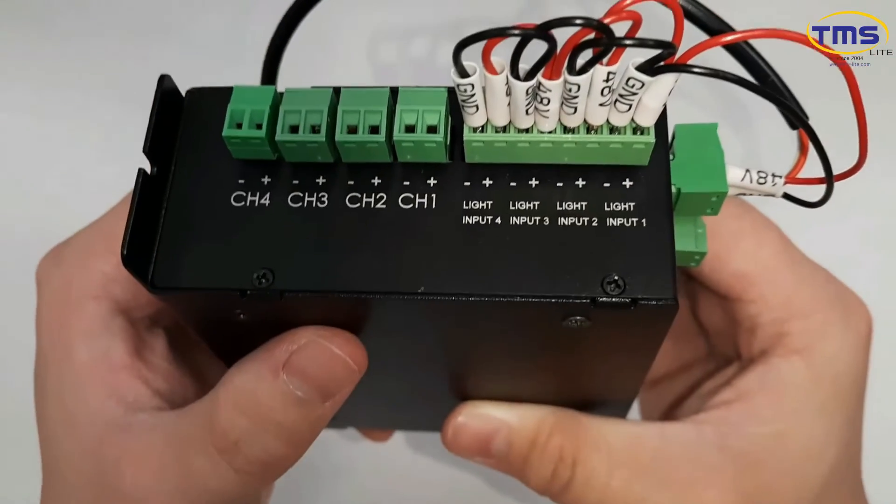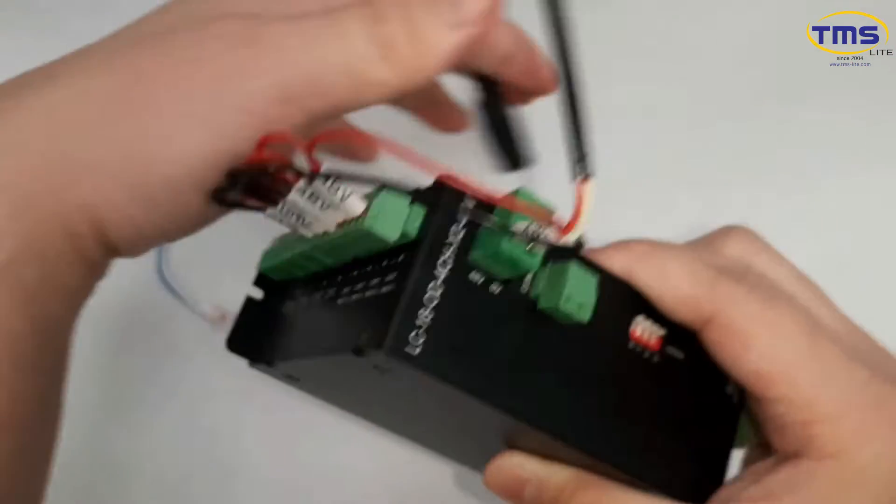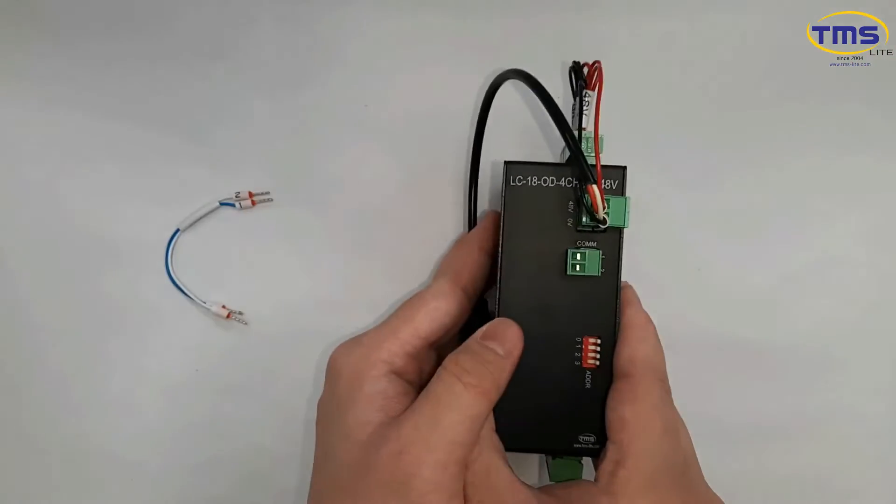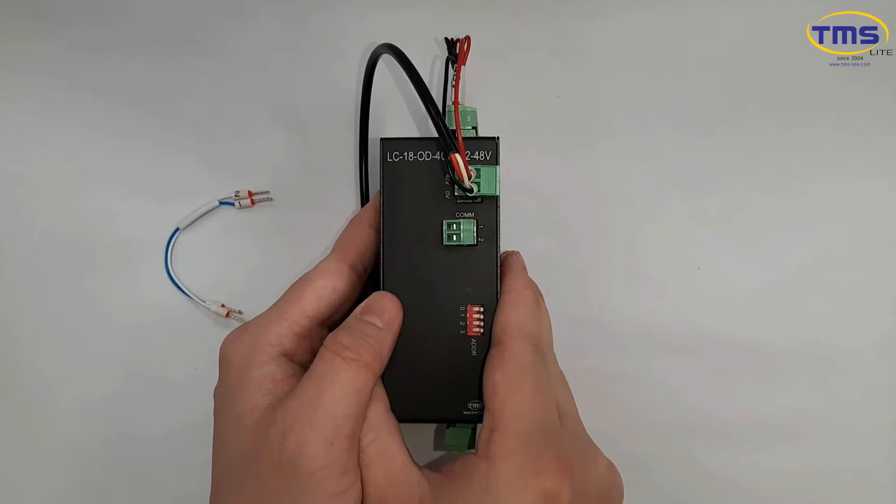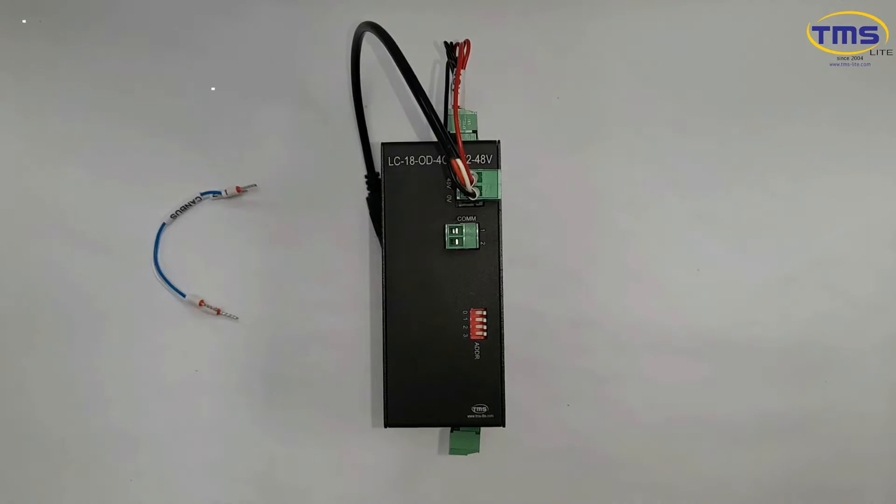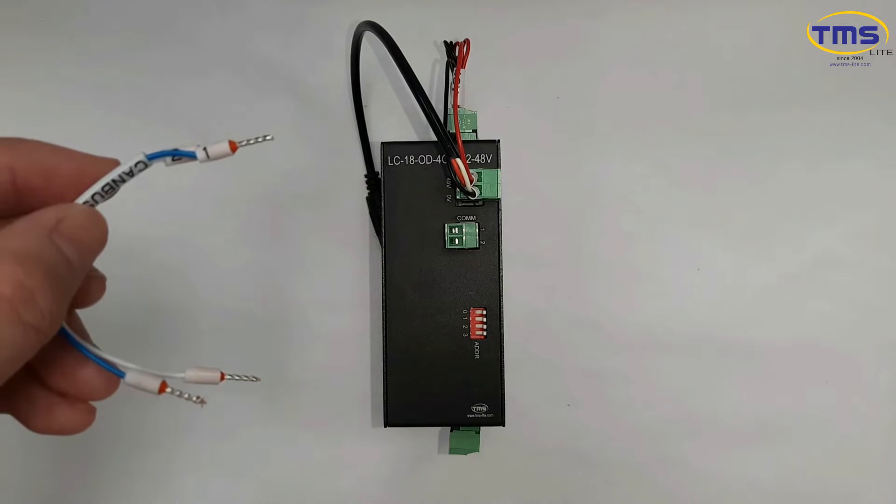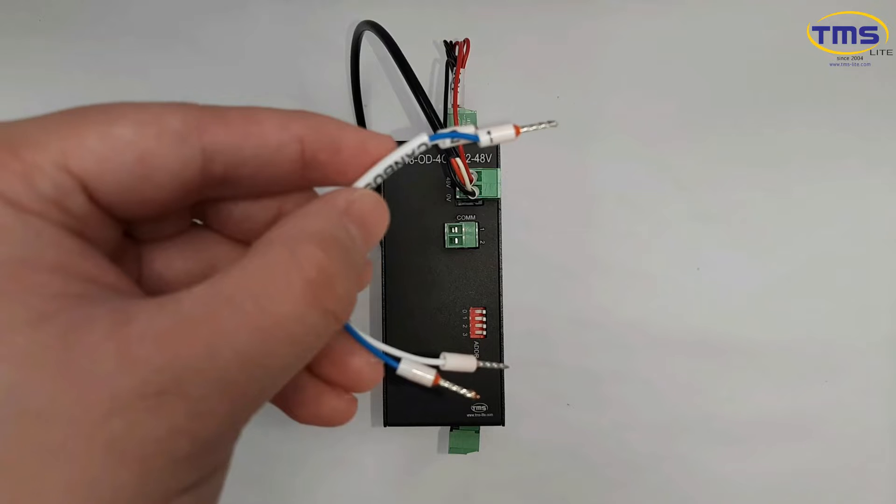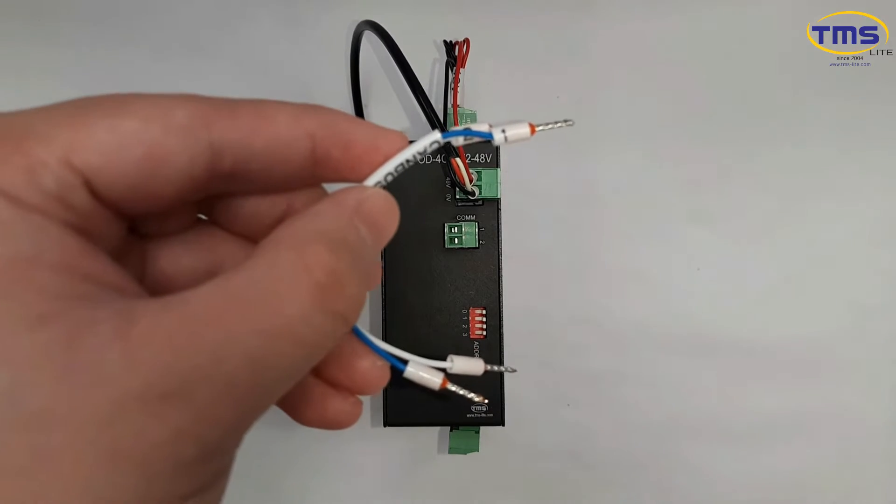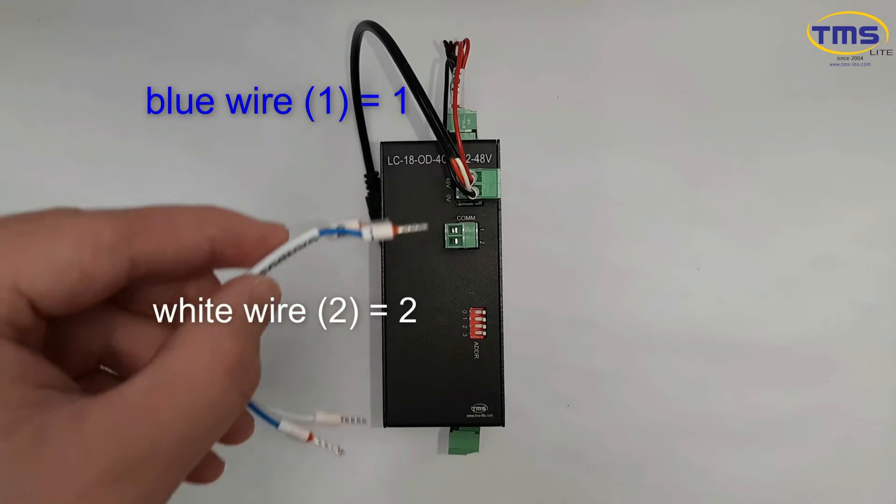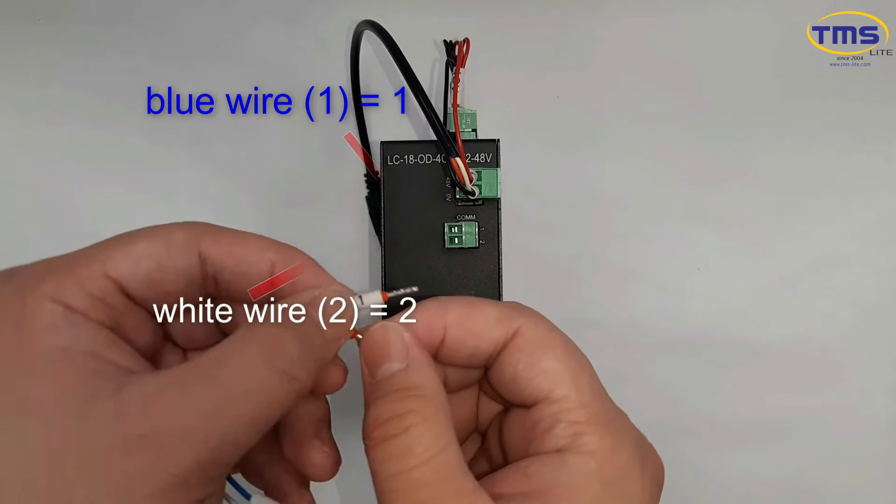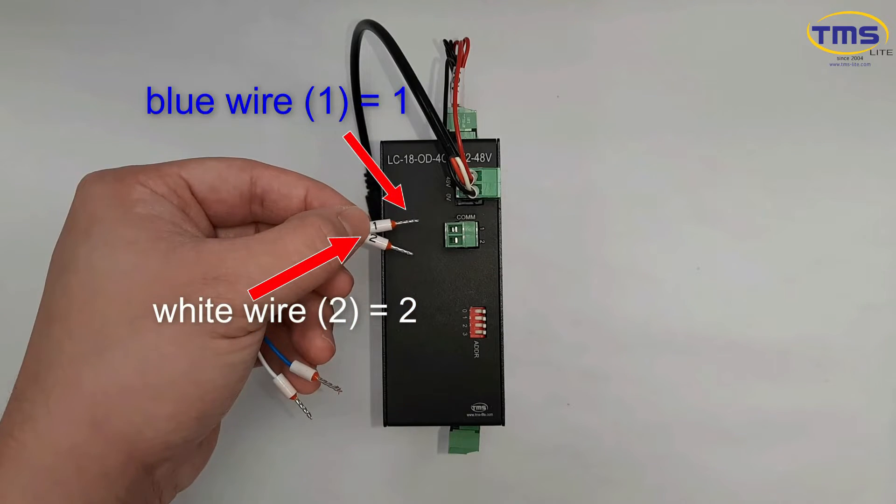The polarity for the light input is the same as the power input. Connect the two canvas wires to the terminal. Insert the blue wire to pin 1 and the white wire to pin 2.